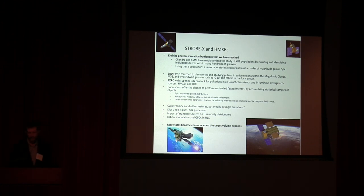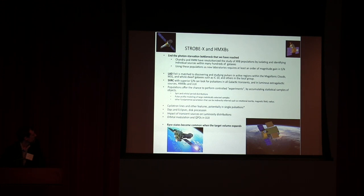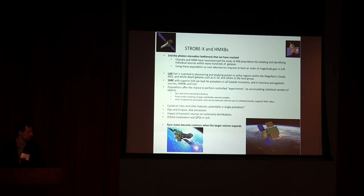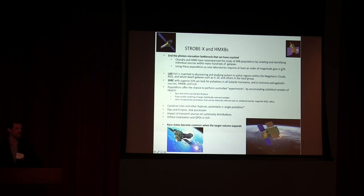Pulsating sources exist in external galaxies, as we've just heard. So, Strobe-X and high mass X-ray binaries — I even look at this as an end of the photon starvation bottleneck that we've reached. Chandra revolutionized the study of populations by isolating individual sources in hundreds of external galaxies, but in many cases we don't know very much about the individual nature of those sources. Most of what we know comes from hardness ratios, quantile diagrams, and looking for optical counterparts, which is almost impossible once you get beyond Magellanic distances. Using these populations as a new laboratory requires at least an order-of-magnitude gain in signal-to-noise, so that we can work out everything we need to know from X-rays and not rely on tracking down the optical counterparts.